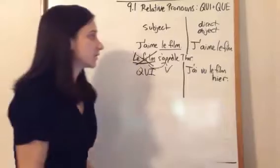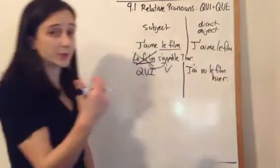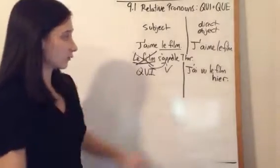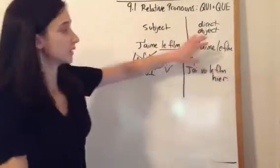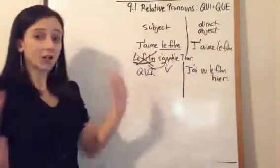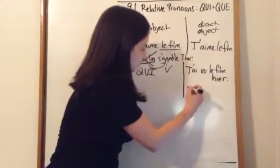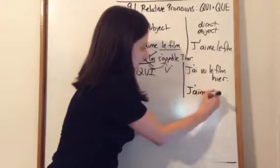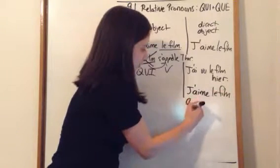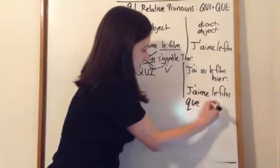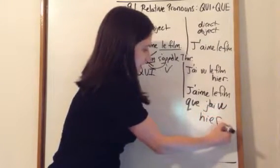Well, now we have to link them. So, j'aime le film. Remember, think about this in English. What would you say here? I like the movie. I saw the movie yesterday. You would say, I like the movie that I saw yesterday. So, it's the same in French. J'aime le film. I'll just write it down here. Que j'ai vu hier.